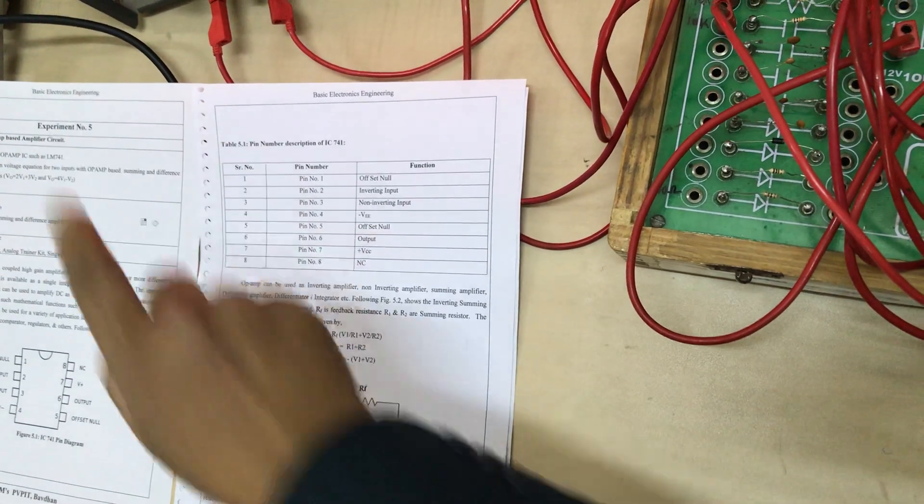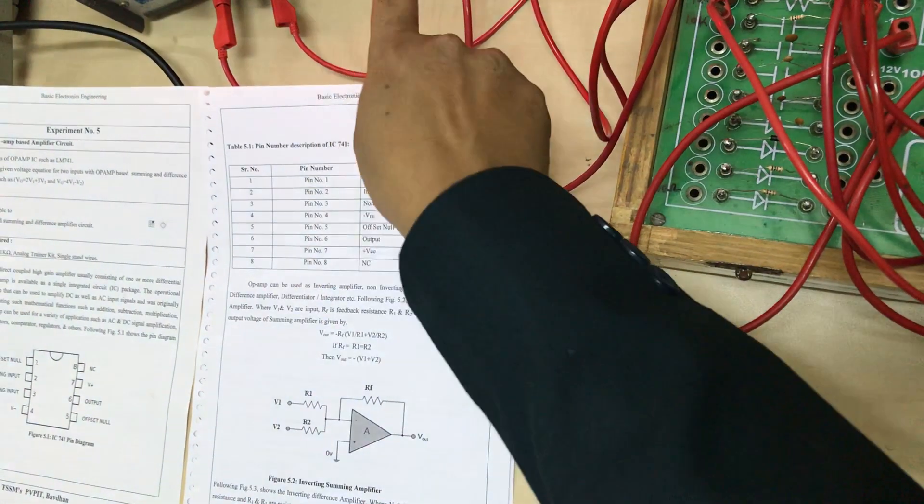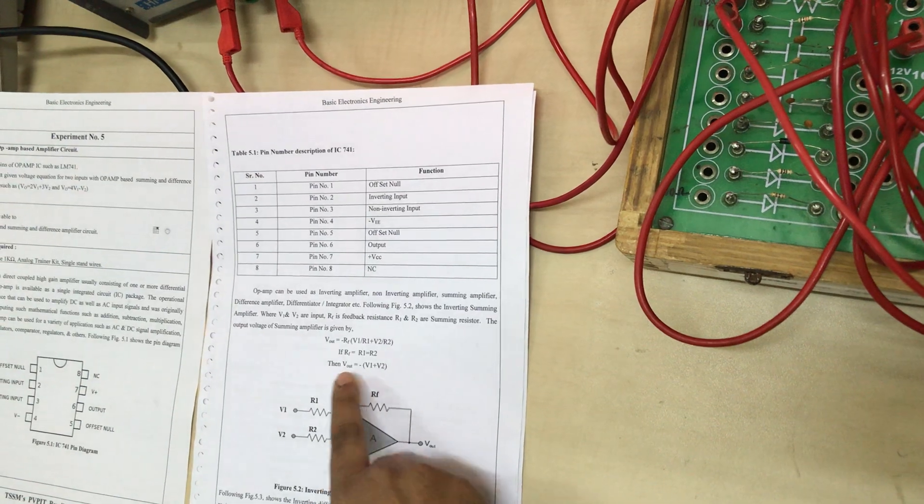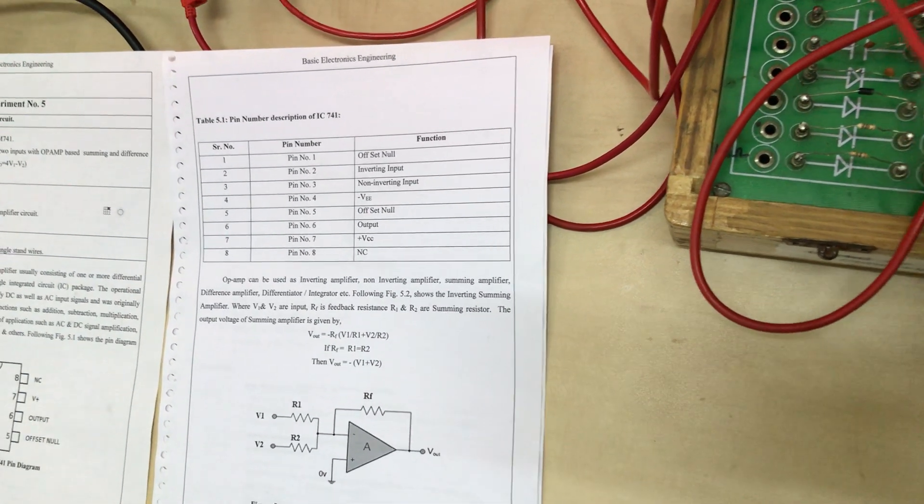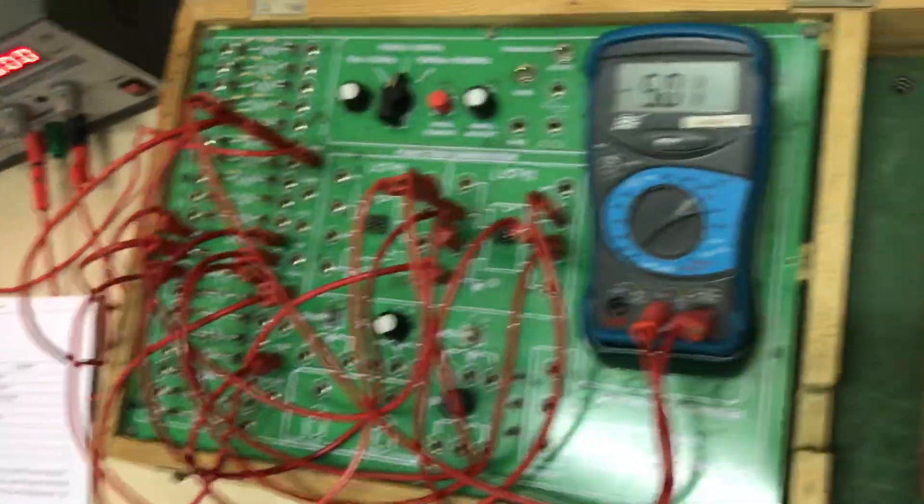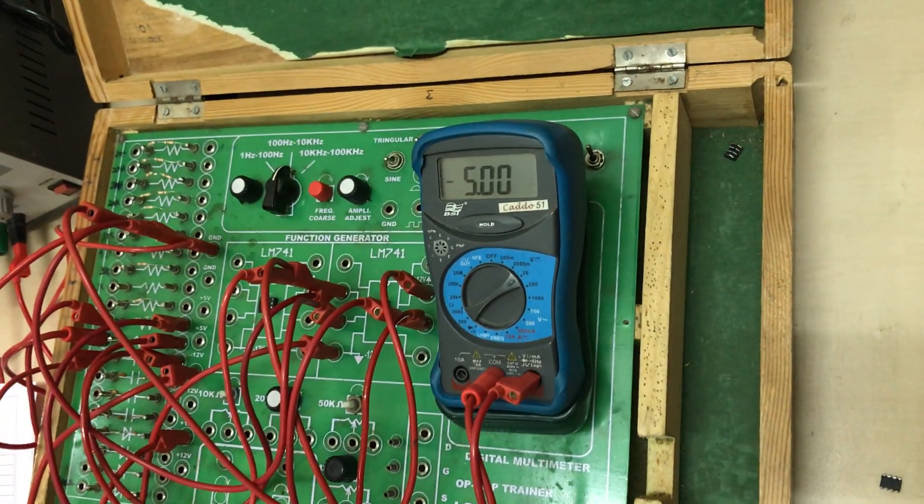If V1 is now 2 volts, V2 is now 3 volts, then output voltage is equal to minus 5 volts, that is the theoretical value. So we have to verify the same answer practically.